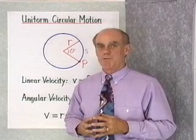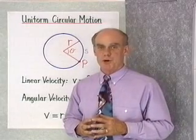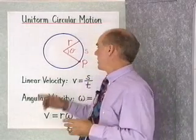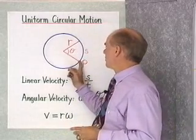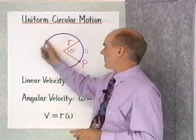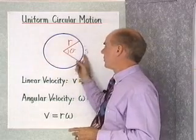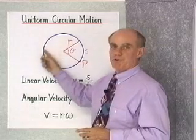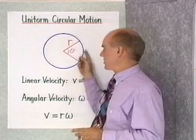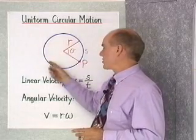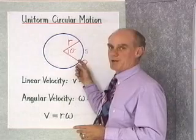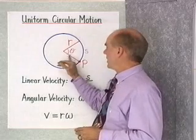In this section, we're going to talk about uniform circular motion. You have to imagine a particle moving around the circumference of a circle at a uniform rate — that is, it is moving at a constant rate around this circle.